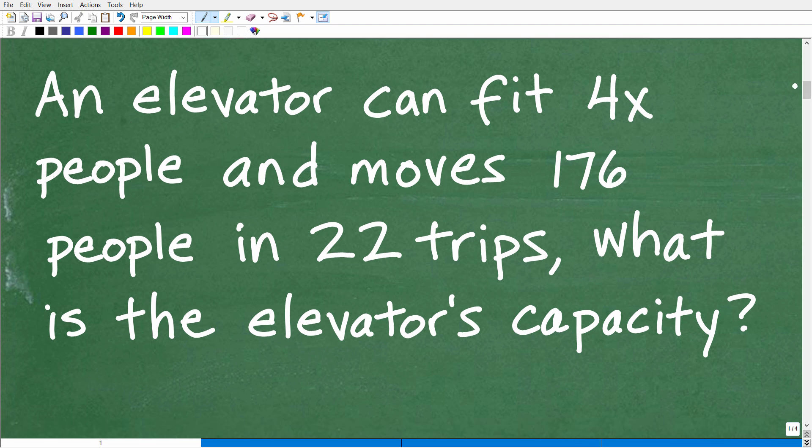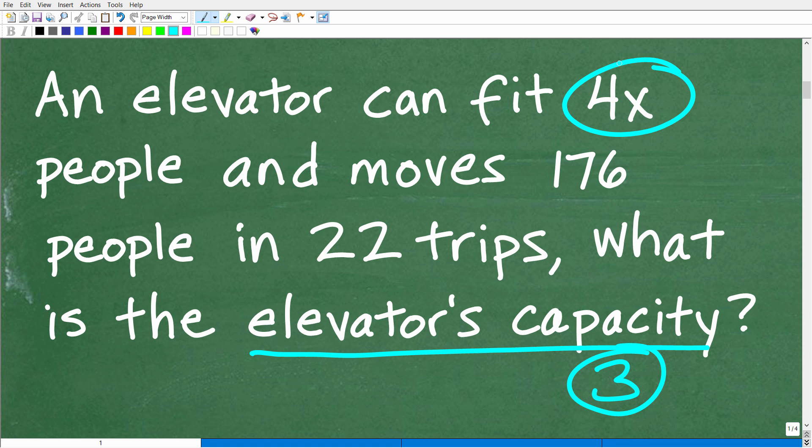So the first thing is we have this lovely problem. And anytime you're dealing with a math problem, I always like to use the rule of three, read the problem at least three times so you can fully assimilate all the information and understand the question. Now of course, I read the question to you. And if you didn't understand what an elevator's capacity is, well now you do. So we have this situation. An elevator can fit this many people, 4x. And again, we have this variable going on. So I'm thinking definitely have to use some algebra. But anyways, an elevator can fit 4x people and moves 176 people in 22 trips. What's the elevator's capacity?